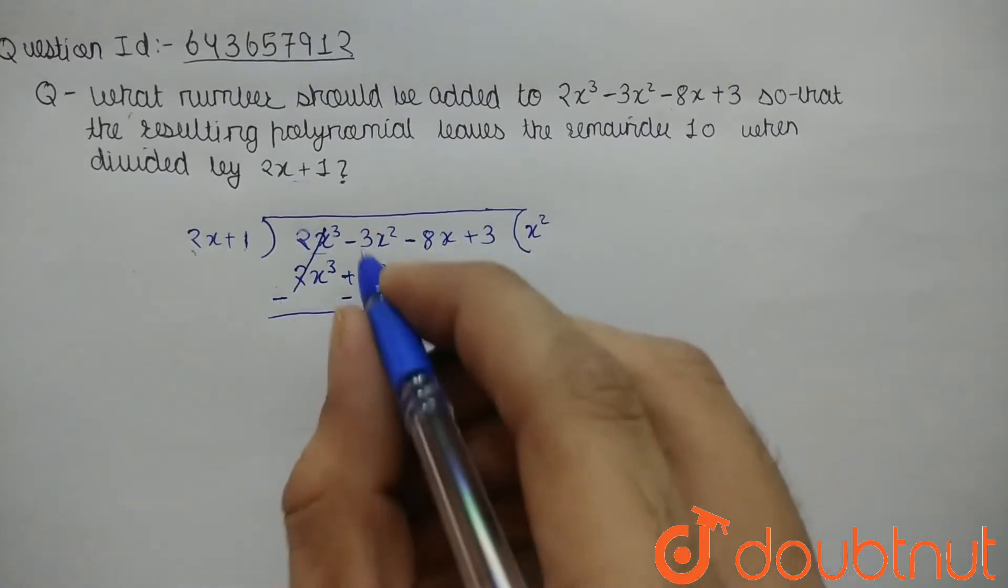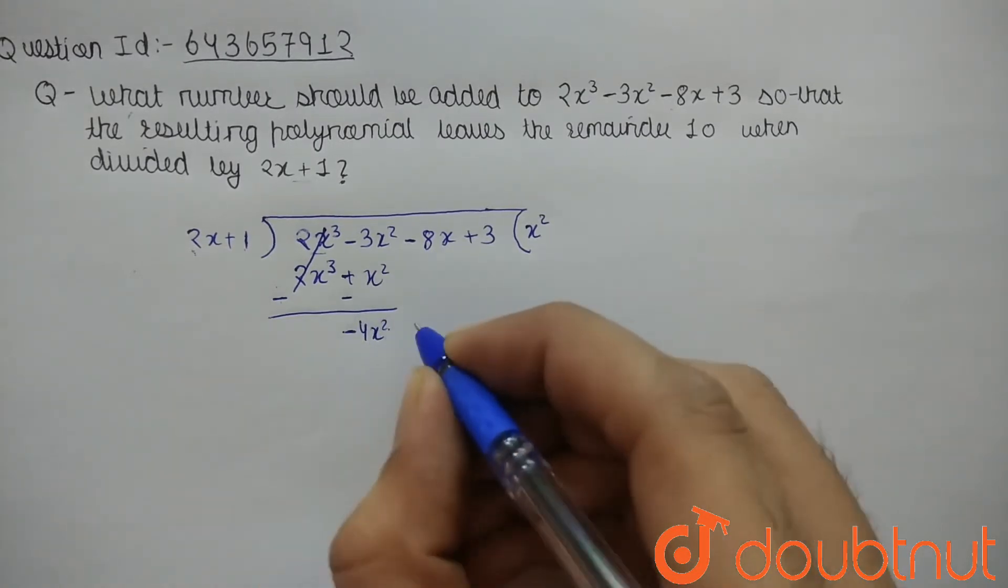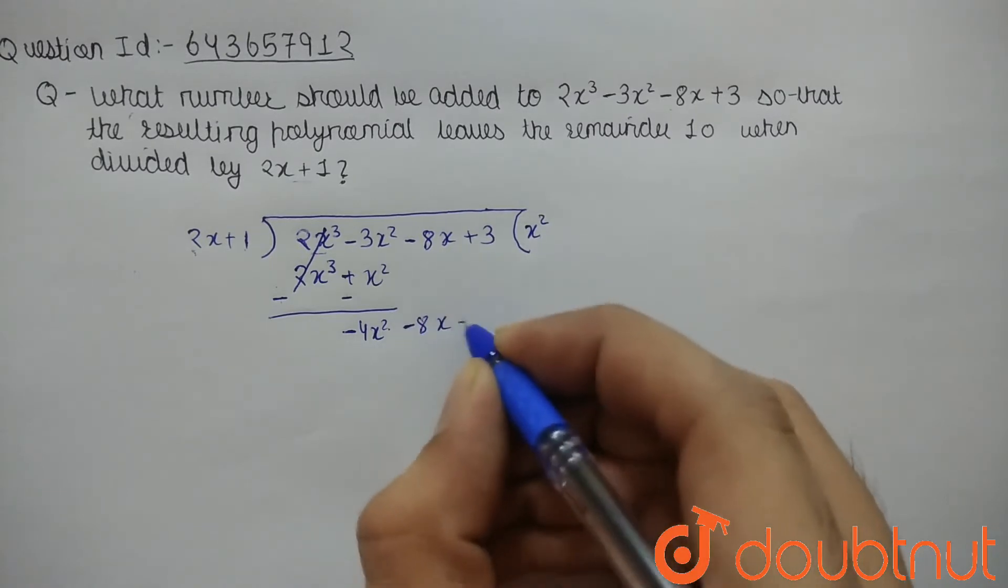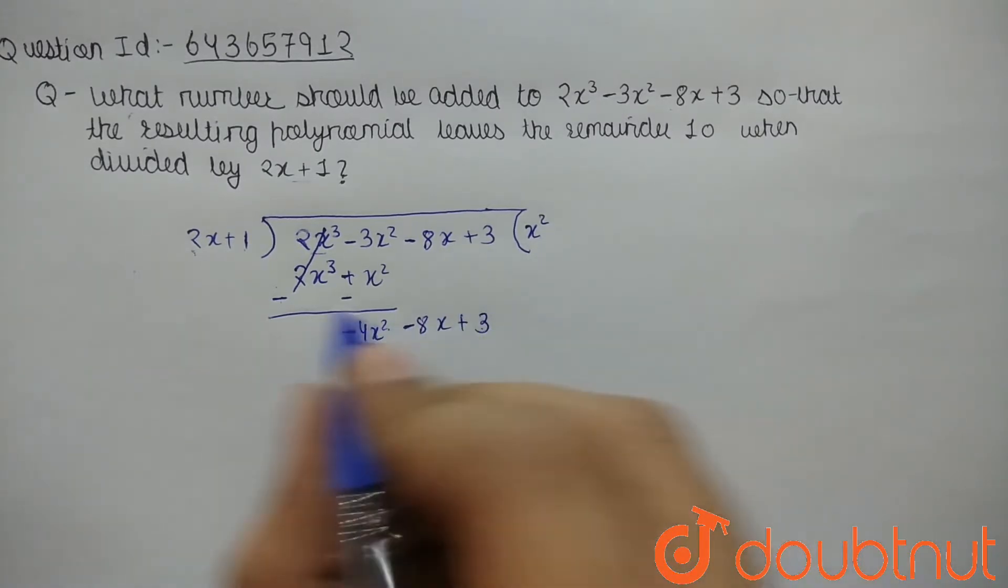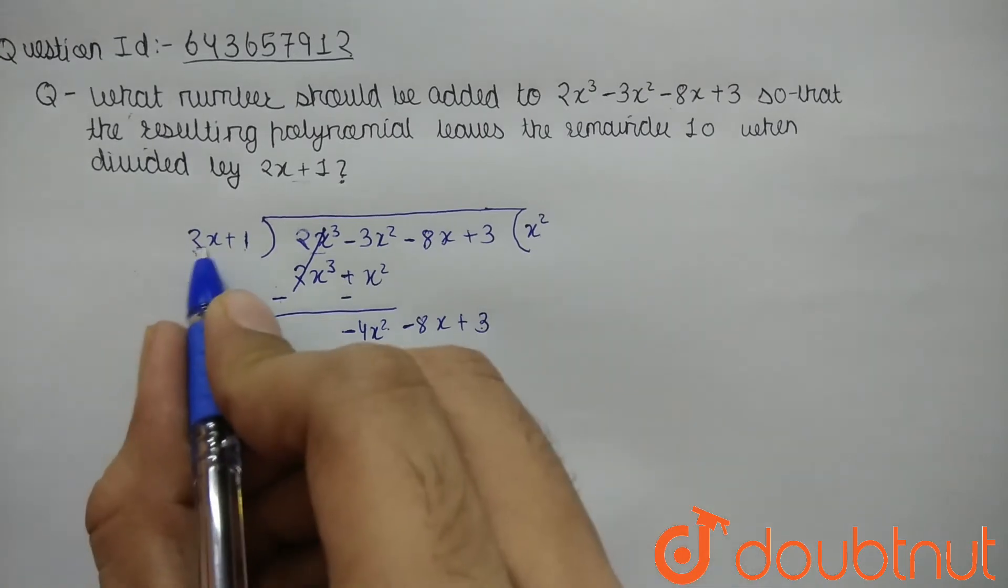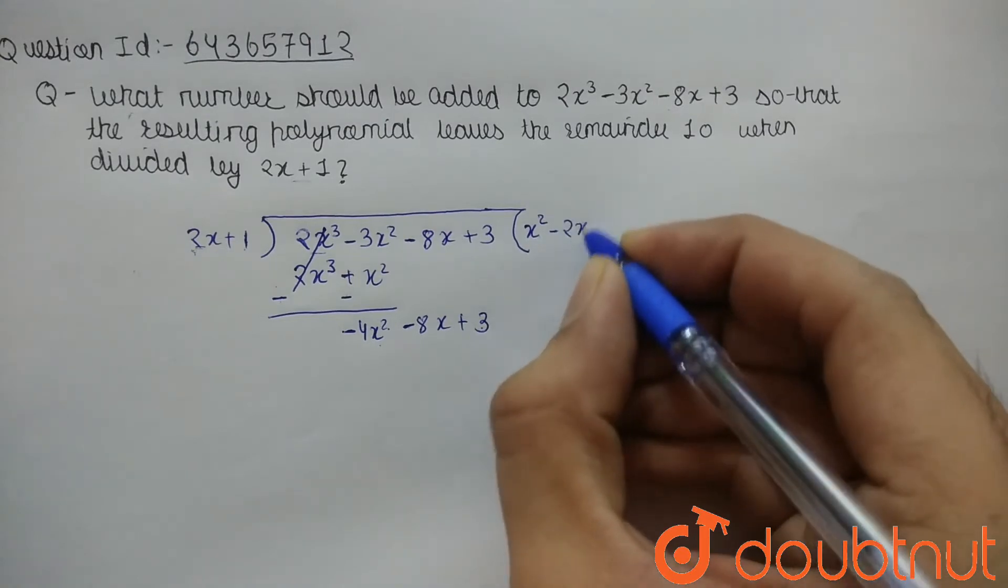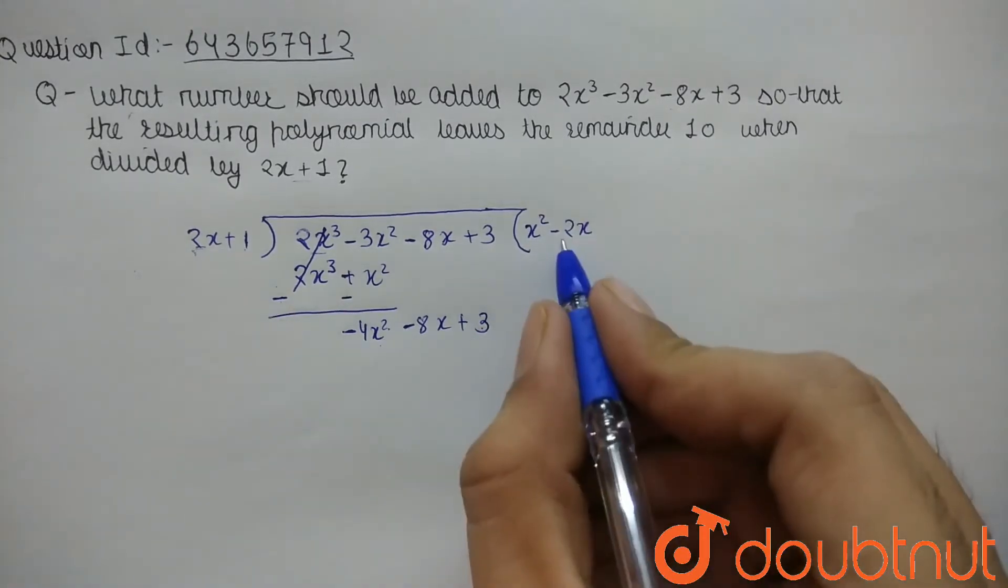Cancelled out, cancelled out. -8 + 2 is -6x, then + 3. Now what we need to multiply to 2x to make it -6x? -3. So 2x into -3 is